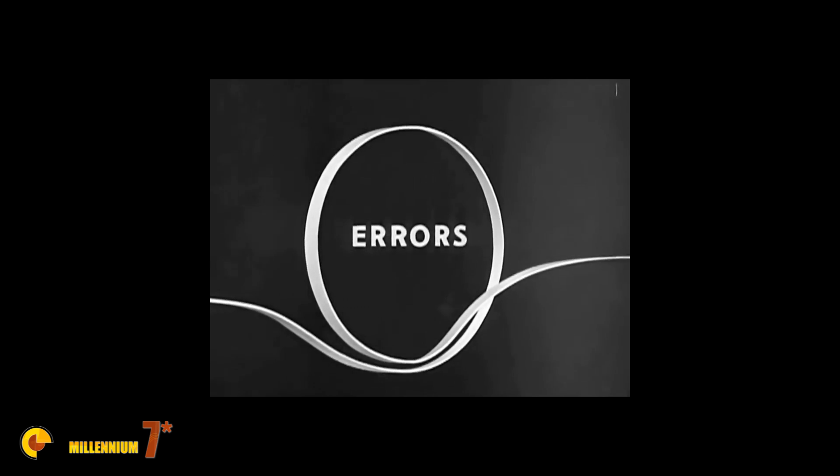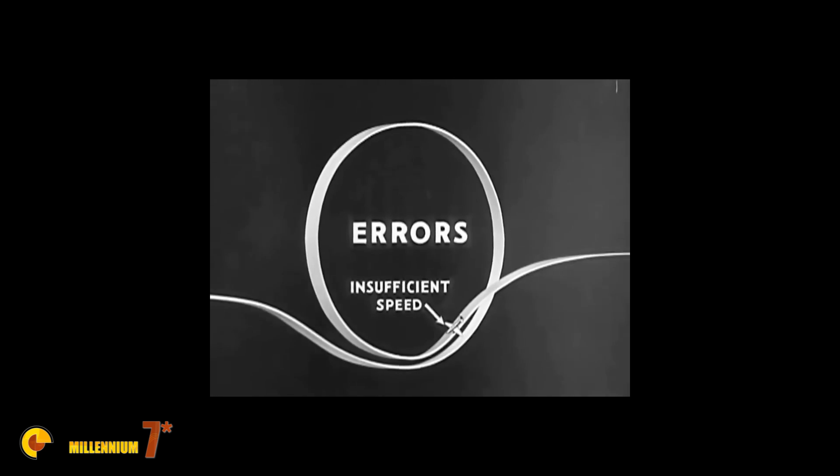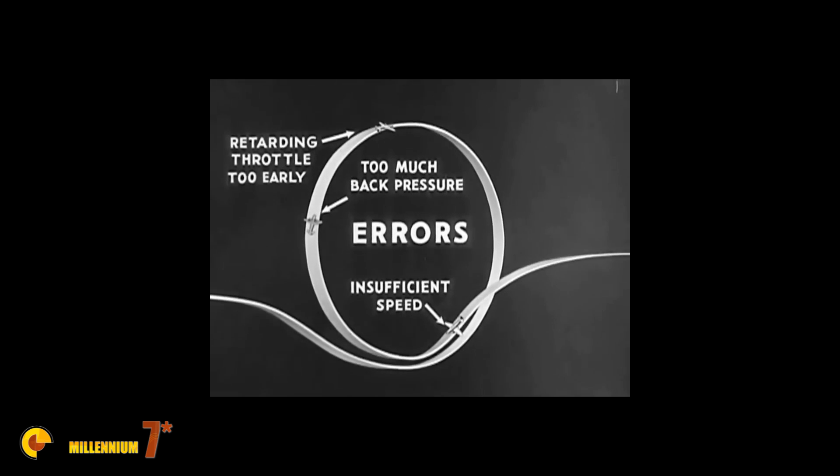In performing the loop, here are the points of common errors. Failure to attain sufficient speed on the dive before the climb is started. Too much back pressure on the stick during the climb. This may lead to a stall. Retarding the throttle too early, this makes the airplane fall out of the loop. And lastly, errors in rudder use at any point in the loop. This results in failure to maintain the flight path in a vertical plane.